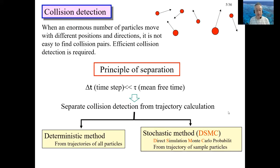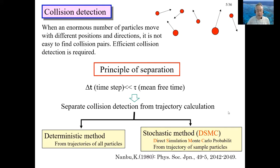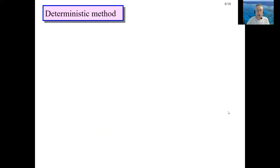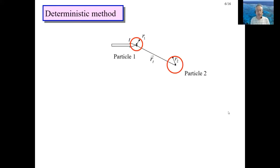The principle of separation is classified into two kinds: the deterministic method and the stochastic method. Direct Simulation Monte Carlo represents the stochastic method, usually called DSMC. In the deterministic method, all particles are calculated. The stochastic method calculates the trajectory of only sample particles. Regarding DSMC, the method developed by Professor Bird will be explained. First, the deterministic method is explained.